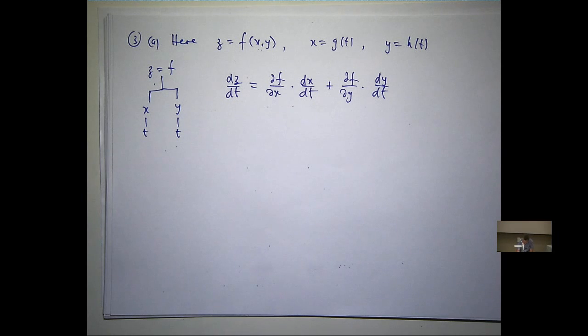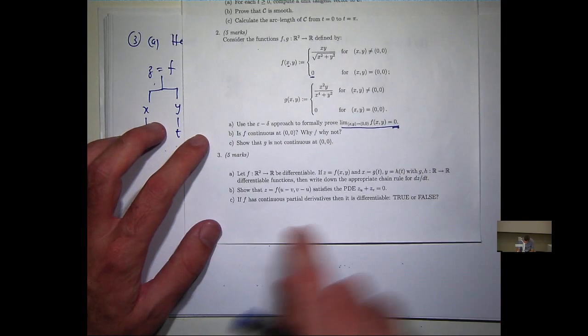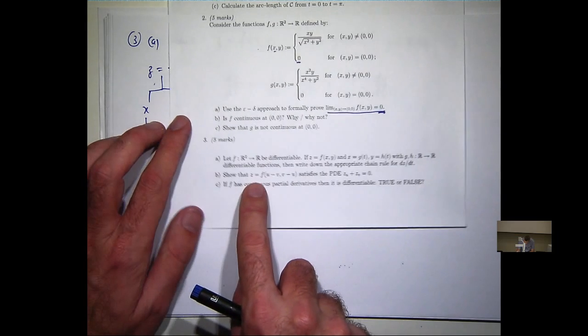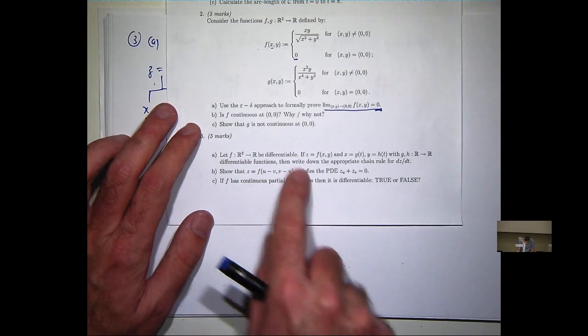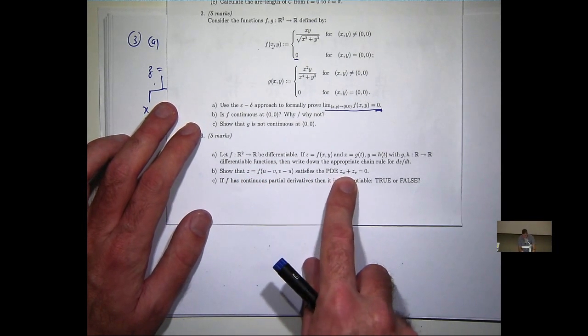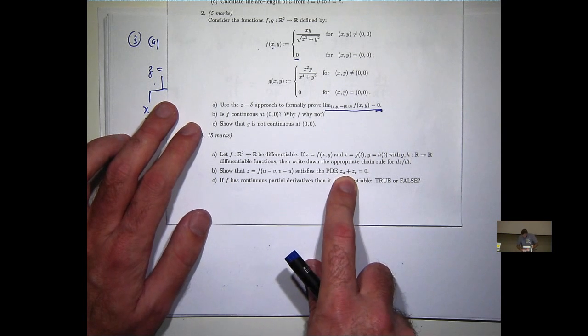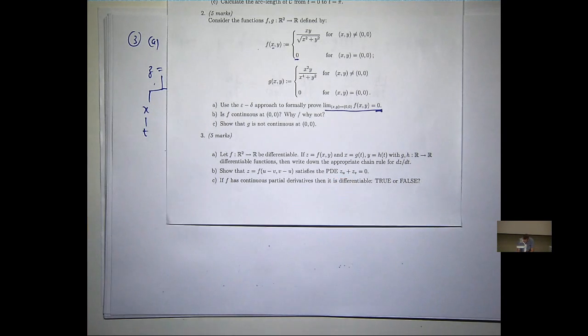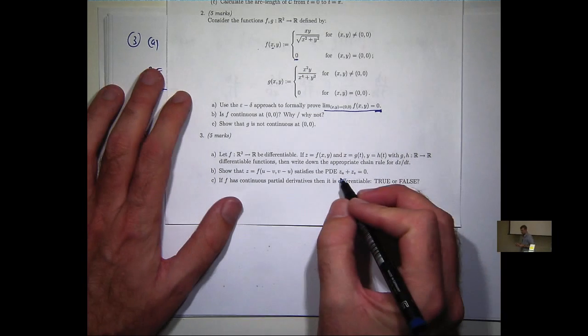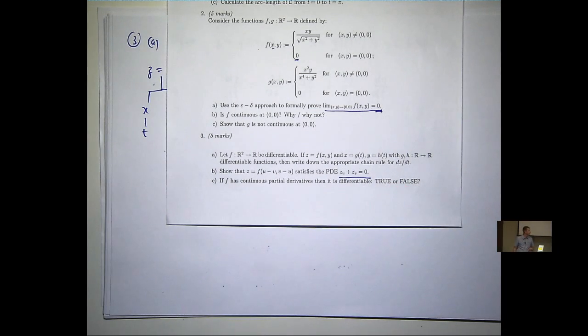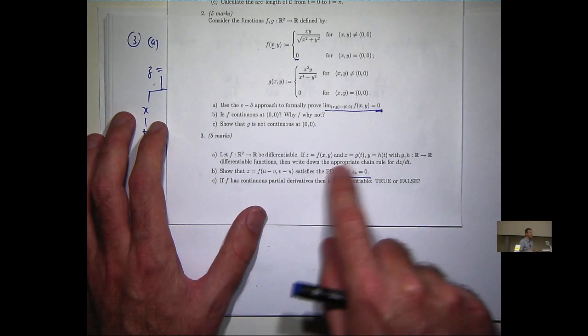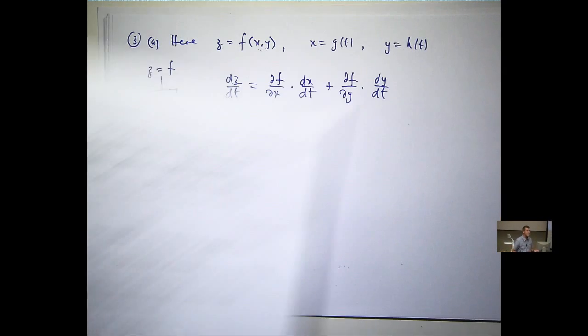Part b. Show that if f is of this form, it satisfies the following PDE. So what we want to do here is calculate the partials in the PDE, z sub u and z sub v, and show that they satisfy this equation. So just show the left-hand side equals the right-hand side.